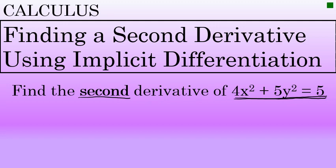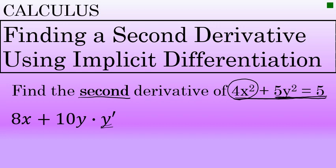First, we'll take the derivative of both sides of this equation with respect to x. Let's take the derivative term by term. The derivative of 4x squared is 8x. Because we're finding the derivative of y with respect to x, the derivative of 5y squared is 10y times y prime, which represents the derivative of y with respect to x. On the other side of the equation, the derivative of 5 is just 0.